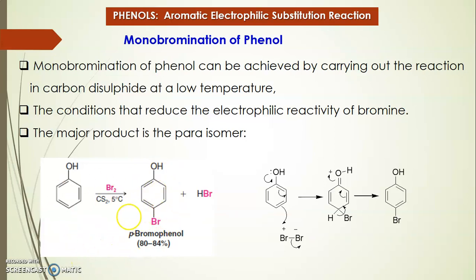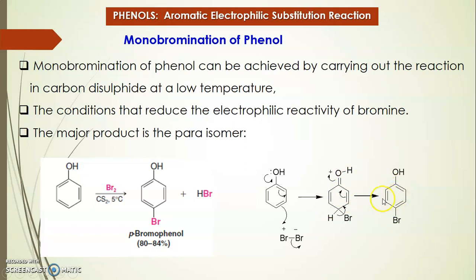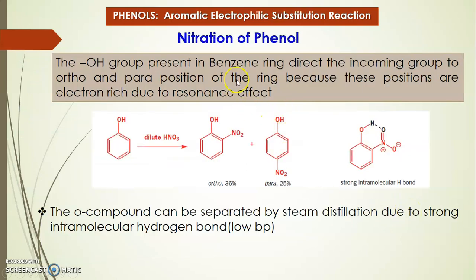The para position is highly activated compared to ortho, and at the ortho position there is also the problem of steric strain. The mechanism can be shown as follows: the lone pair on oxygen activates the para carbon. The double bond breaks here, and bromine — which is polarized such that one bromine is partially positive and the other is partially negative — attacks this carbon. The Br⁻ is expelled and you get an intermediate, which immediately aromatizes to give para-bromophenol.